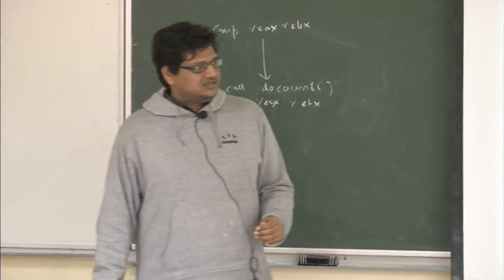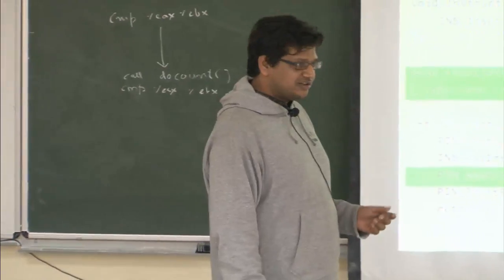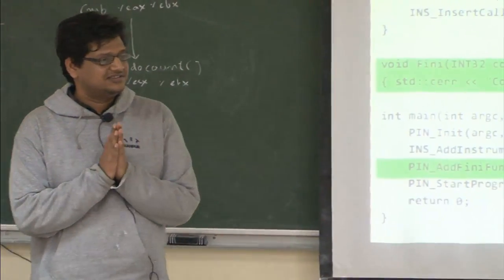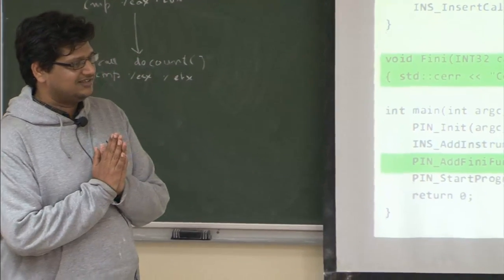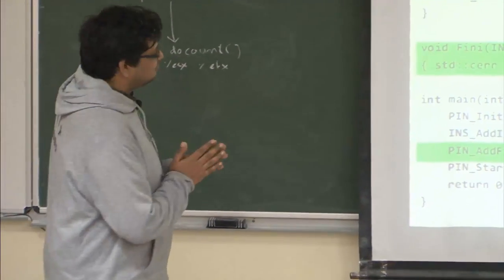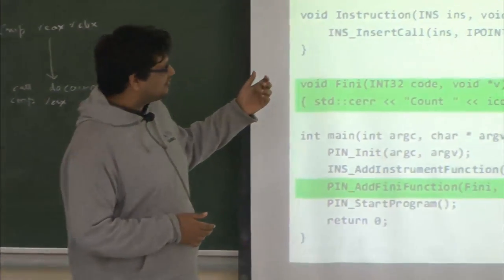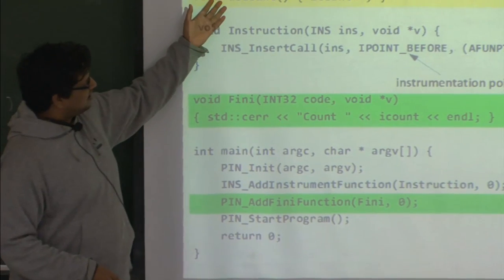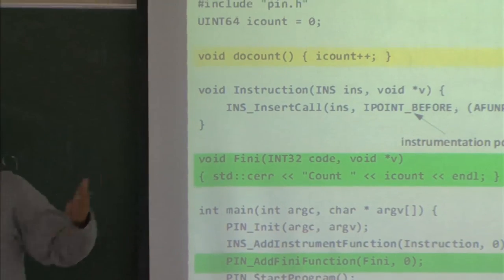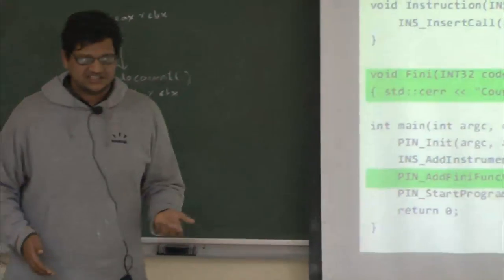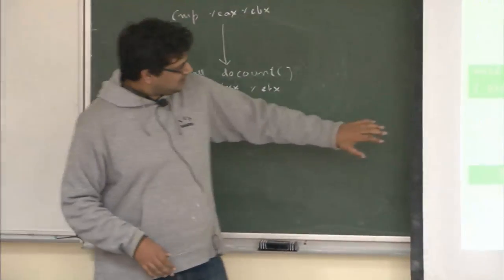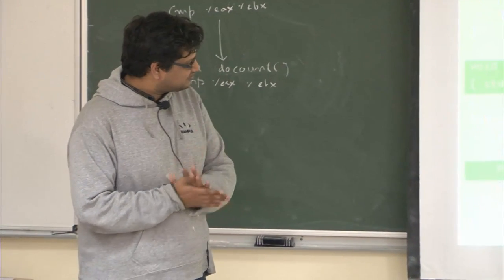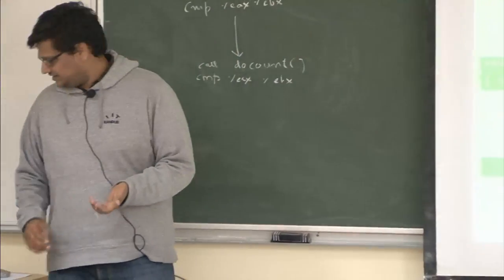Even in the case of abnormal termination (exit code -1), this Fini function will still be called. You can use it for any cleanup at termination — for example, freeing memory you allocated for your PIN tool. These event functions are generally used for initialization and cleanup.